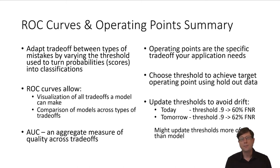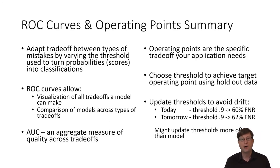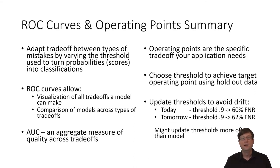Once you know your operating point, you choose a threshold on the model's probability output that achieves it on holdout data. You may end up updating your thresholds more often than the model itself — for example, resetting thresholds every day while only retraining the model once a week. The threshold is now another part of your model package: you don't just ship the weights, you also ship the feature creation and selection parameters plus a threshold, and all of those may need to be updated independently.